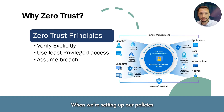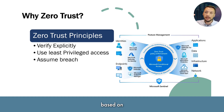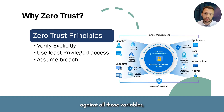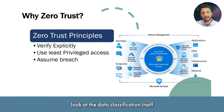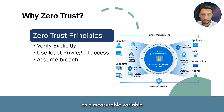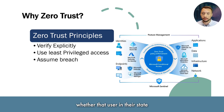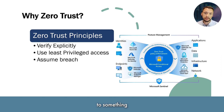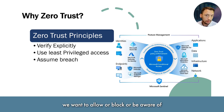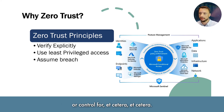When we're setting up our policies based on what users are trying to do and measuring against all those variables, how much do we want to look at the data classification itself as a measurable variable that decides whether that user — in their state and the device that they're on — all marries up to something we want to allow, block, be aware of, or control for.